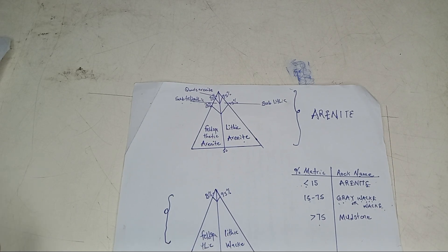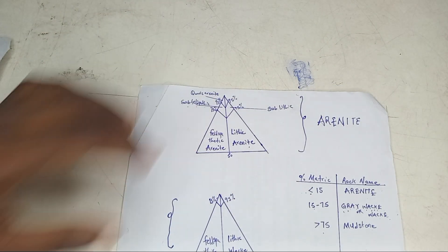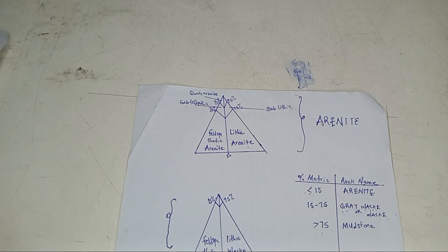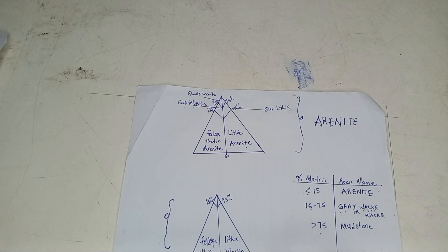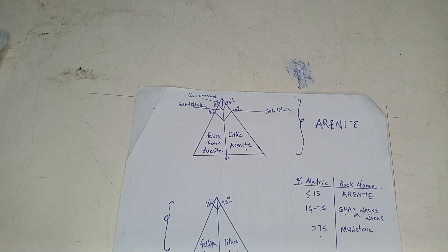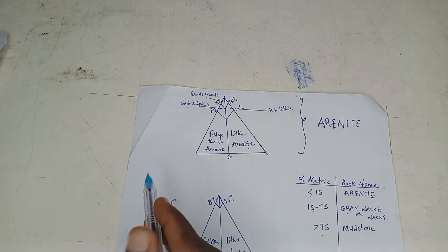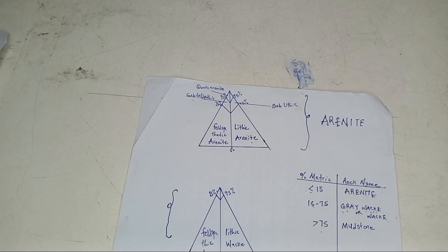That's all about arenite. Just remember the diagram. If it's 95% quartz, it's quartz arenite. Between 95% and 75%, if feldspar is higher than rock fragment, it's sub-feldspathic arenite. Less than 75%, if feldspar is higher than rock fragment, it's feldspathic arenite; otherwise it's lithic arenite.